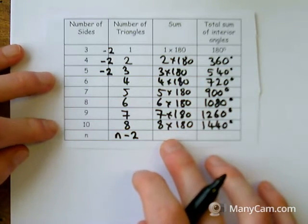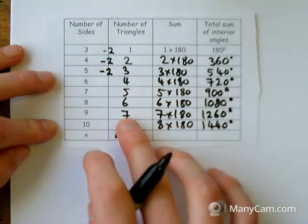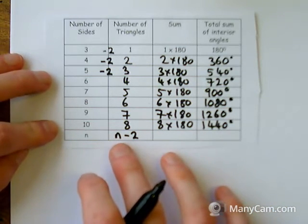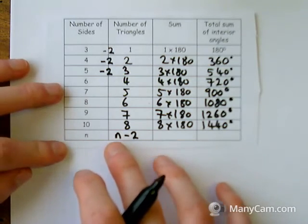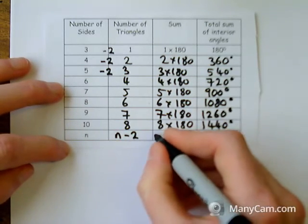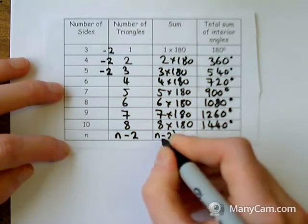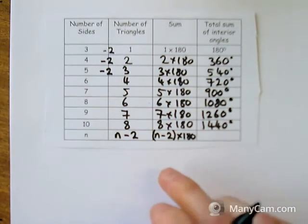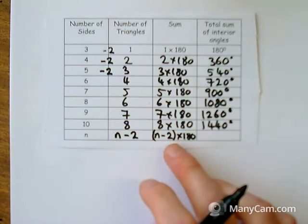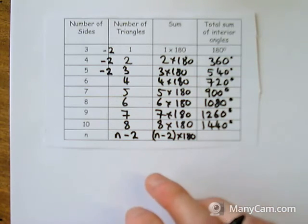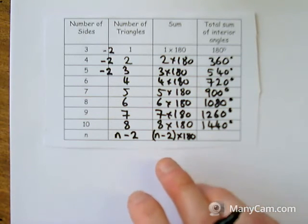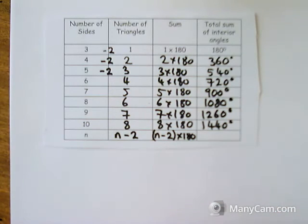To get the total degrees, I multiplied the number of triangles by 180. This time we don't know the exact number of triangles, but we have an expression for it: N minus two. So I multiply that by 180. This formula — (N − 2) × 180 — tells me that for any polygon with N sides, I take away two and then times it by 180, and it gives me how many degrees are in that shape.